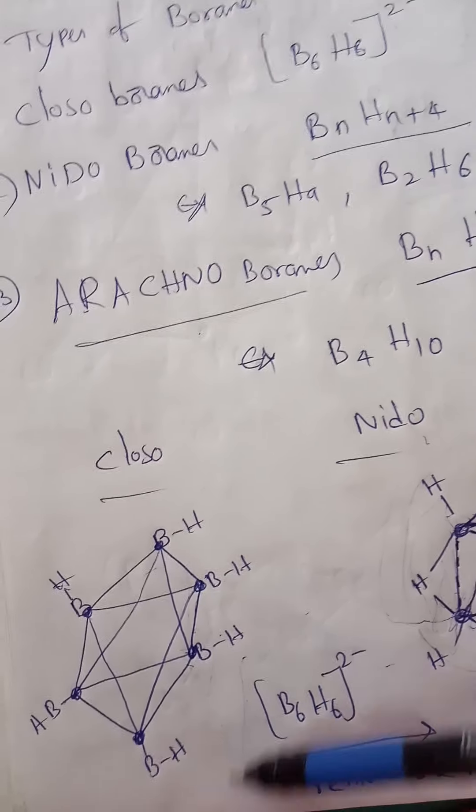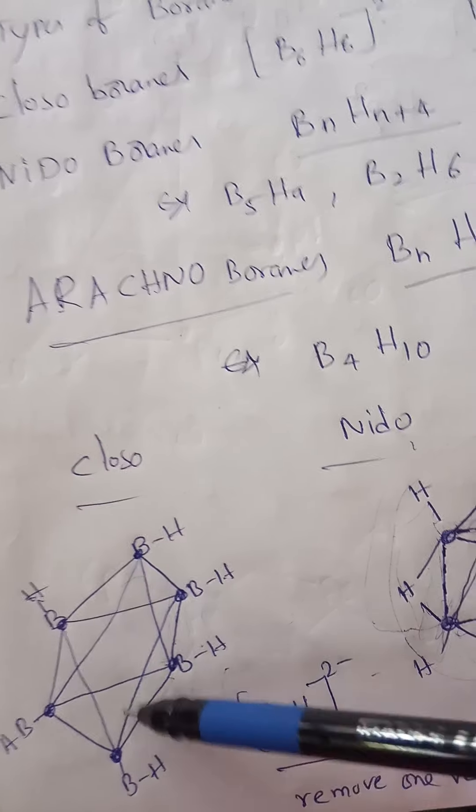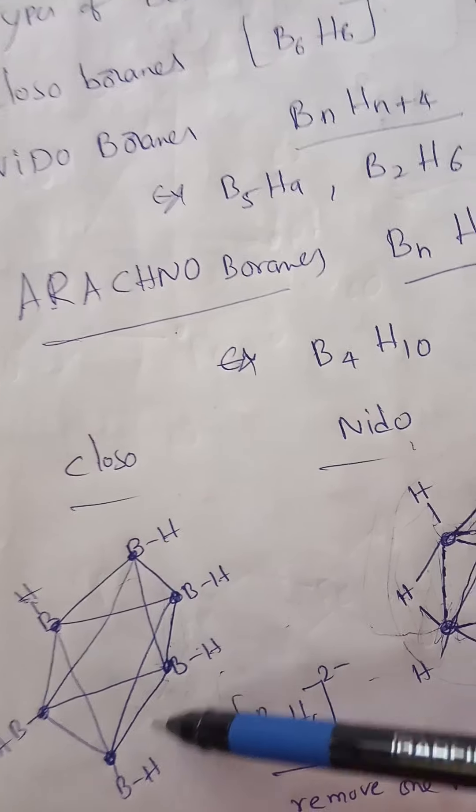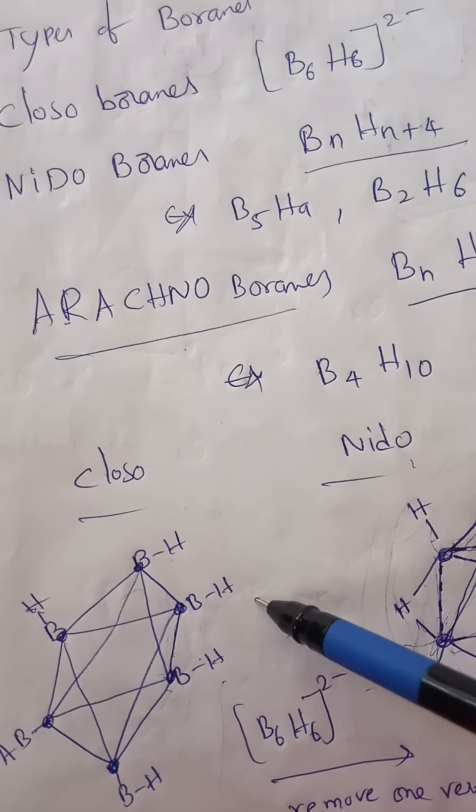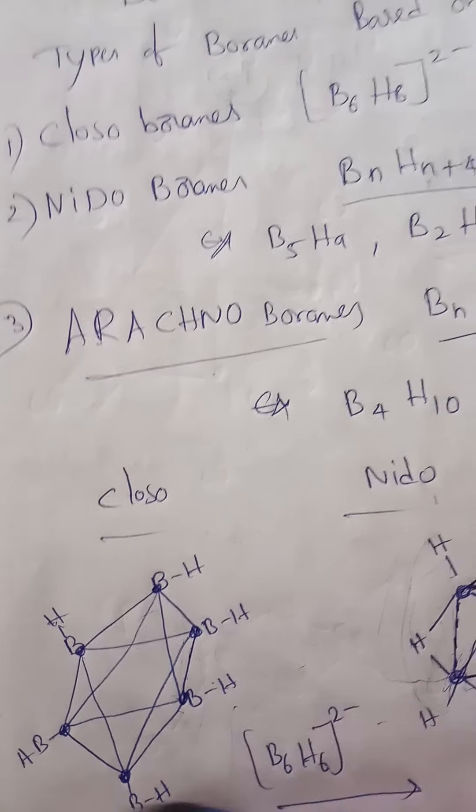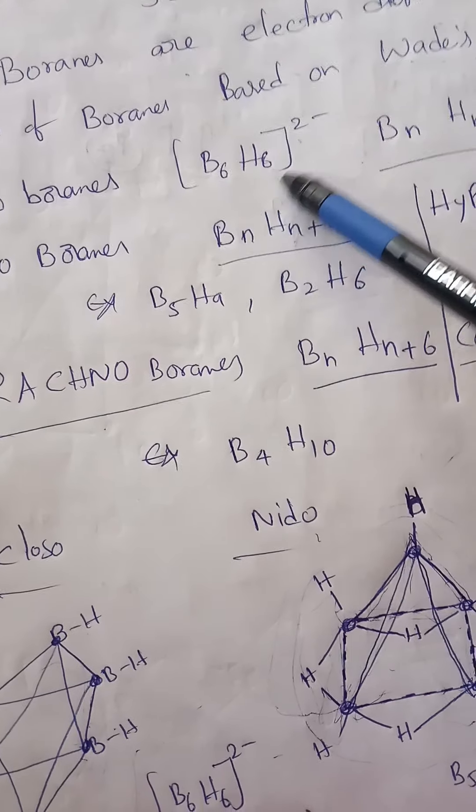Closo-borane has an octahedral shape. Each corner of the octahedron has one boron, and each boron has a terminal BH unit. An example is B6H6 two minus.